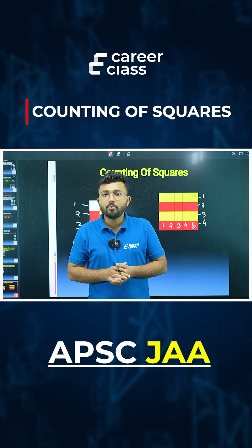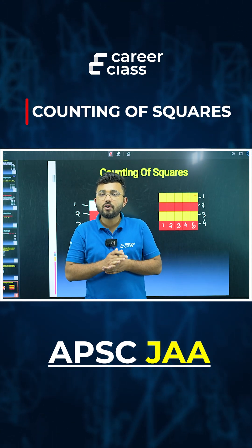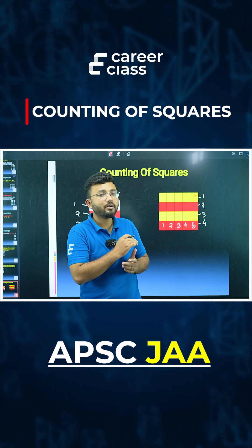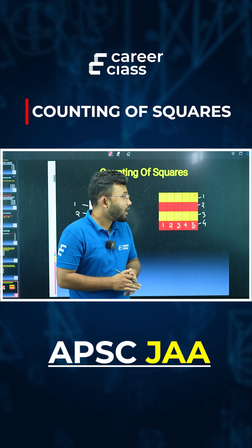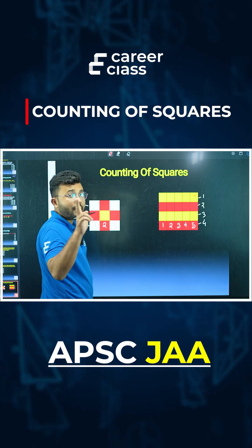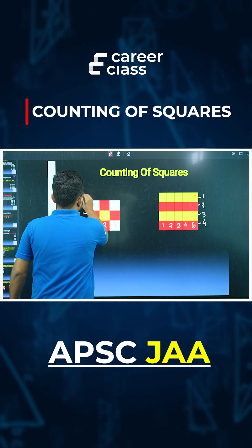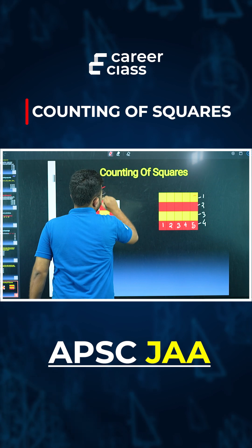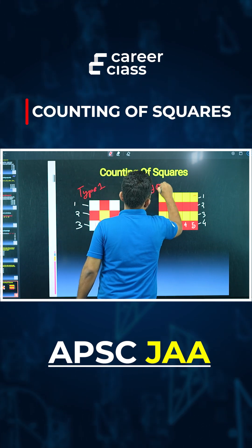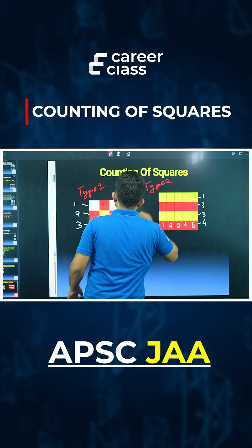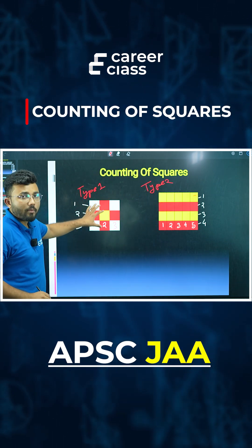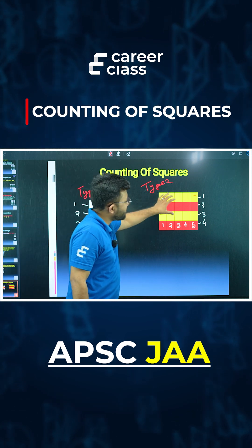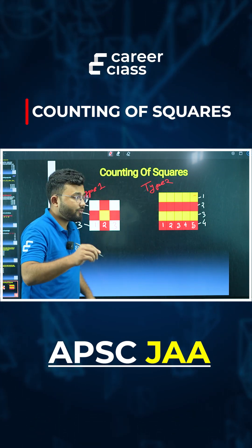Now, I will tell you how to count the number of squares in a figure. The figure has two types: the first type is where the number of columns and rows are equal, and the second type is where the number of columns and rows are different.